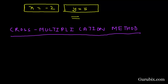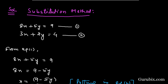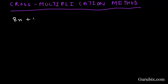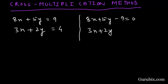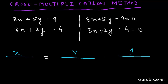Now we shall apply the cross multiplication method. We collect the given pair of equations: 8x + 5y = 9 and 3x + 2y = 4. We write this pair in standard form: 8x + 5y - 9 = 0 and 3x + 2y - 4 = 0. We write x, y, and 1 with the cross-multiplication diagram, placing b1, b2, c1, c2 under x.